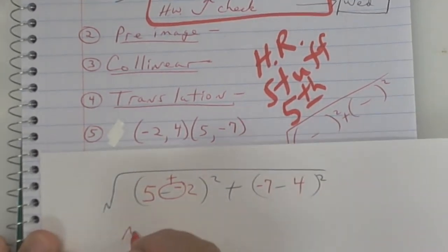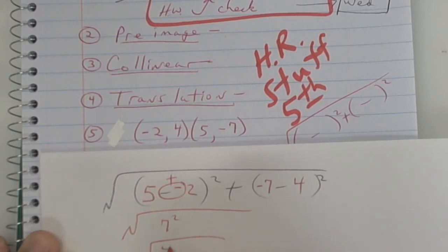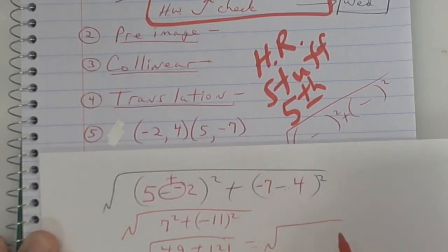And now I work it out. This right here is going to be 7 squared, which is going to be 49. This one right here is going to be a negative 11, but when you square it, it's going to become a positive 121. So I'm getting 100 and whatever that is.